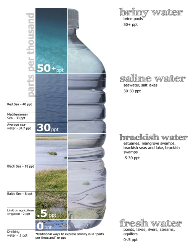Brine is a common agent in food processing and cooking. Brining is used to preserve or season the food. Brining can be applied to vegetables, cheeses, and fruit in a process known as pickling. Meat and fish are typically steeped in brine for shorter periods of time as a form of marination, enhancing tenderness and flavor, or to enhance shelf life.